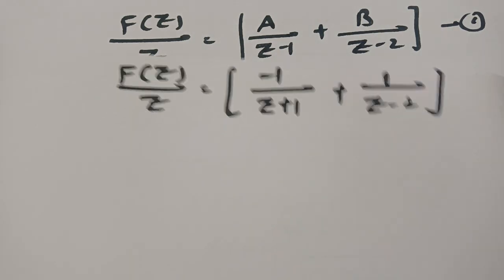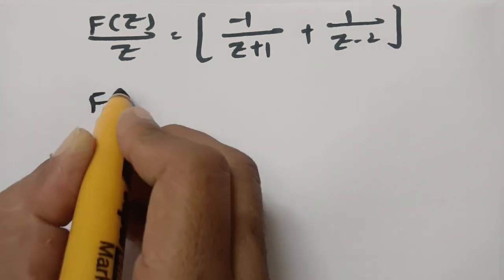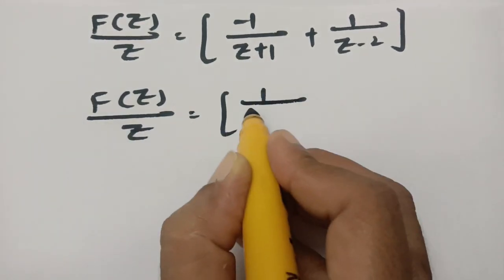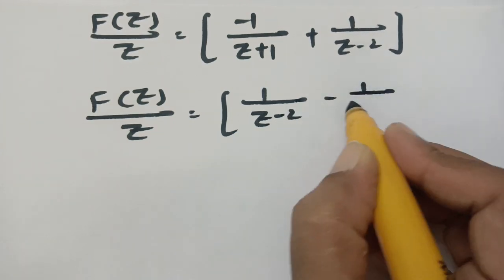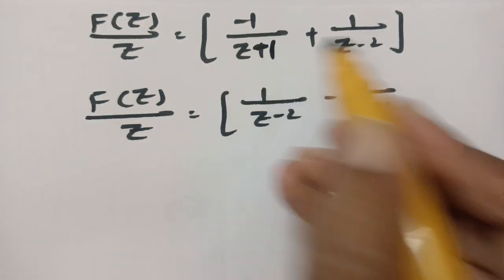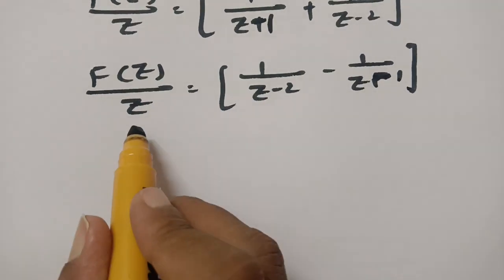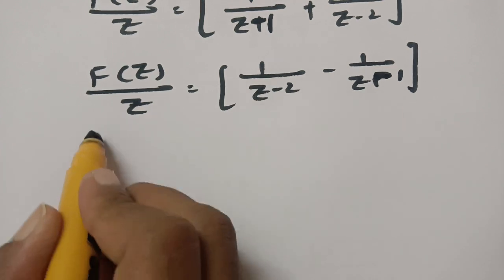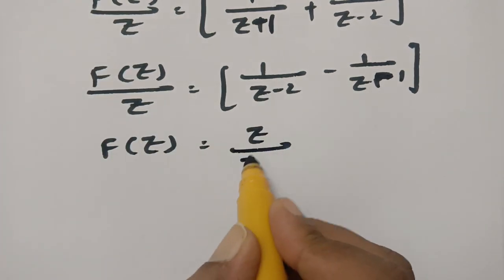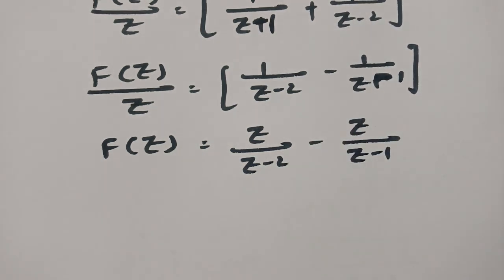After resolving into partial fractions, F of Z by Z can be written as 1 by Z minus 2 minus 1 by Z minus 1. Now sending this Z to the other side, F of Z is equal to Z times Z minus 2 minus Z times Z minus 1.